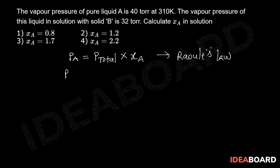The vapor pressure of pure A is 40 torr, and the total pressure equals the vapor pressure of this liquid in solution with solid B. That means the total pressure equals 32 torr.